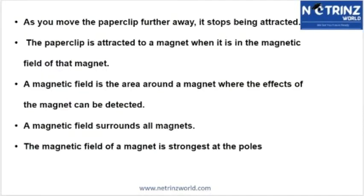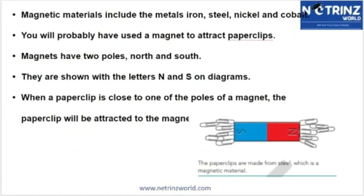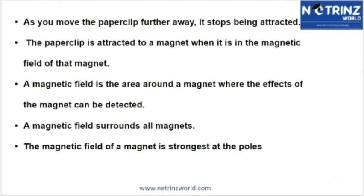As you move the paper clip further away, it stops being attracted. Every magnet has its own area of magnetic field. When you move the paper clip farther from the magnet, the force becomes less and less. Once it is outside the magnetic field, it will no longer be attracted. So there is a specific distance or area around the magnet where the magnetic field exists.